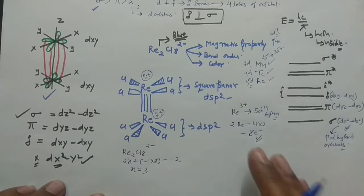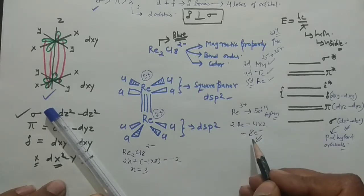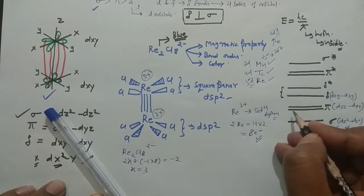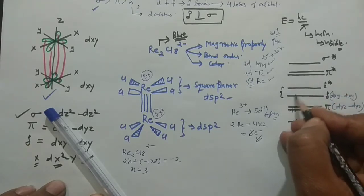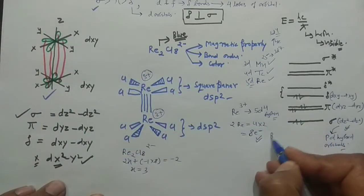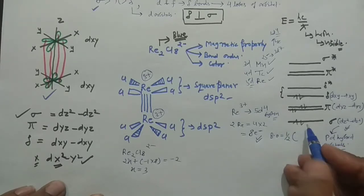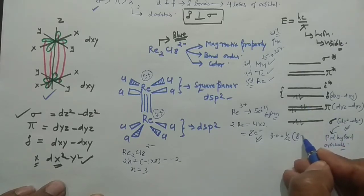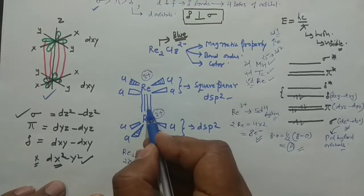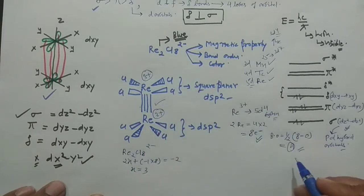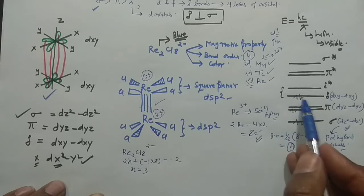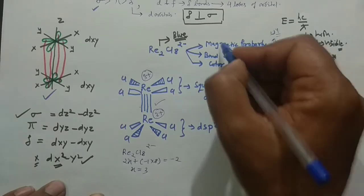Fill these 8 electrons into the MO diagram: 2 in sigma bonding, 2 in pi bonding, 2 in the second pi bonding, 2 in delta bonding — that is 8 electrons total. Bond order = ½(bonding electrons − antibonding electrons) = ½(8 − 0) = 4. So the bond order is 4, confirming the quadruple bond.